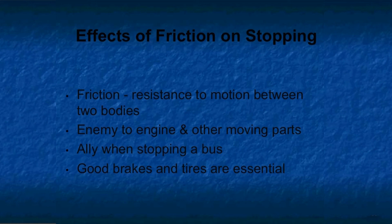Let's talk about the effects of friction on stopping. Friction is a resistance to motion between two bodies. It is an ally to the school bus when starting and stopping, but can be an enemy to the engine, drivetrain, and other moving parts. With only 40 square inches per tire between you and the road, good brakes and tires are essential to stopping the bus. Road surfaces are another factor in friction — hard surface roads offer more friction than dirt and gravel, with dry being better than wet, and wet being better than snow.